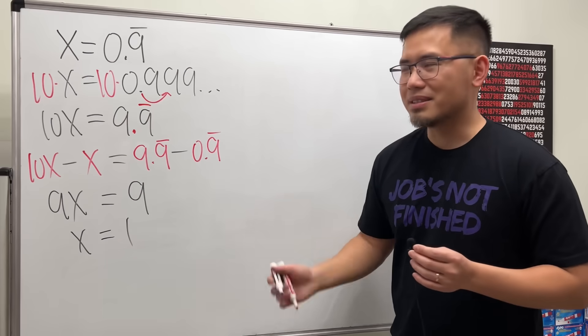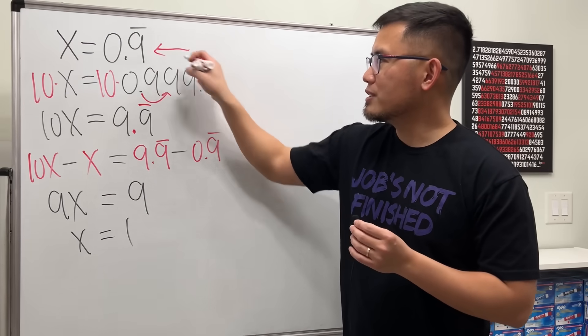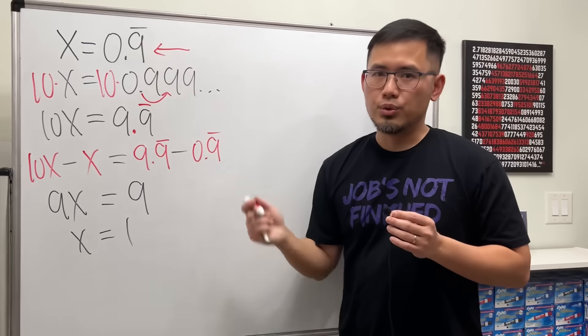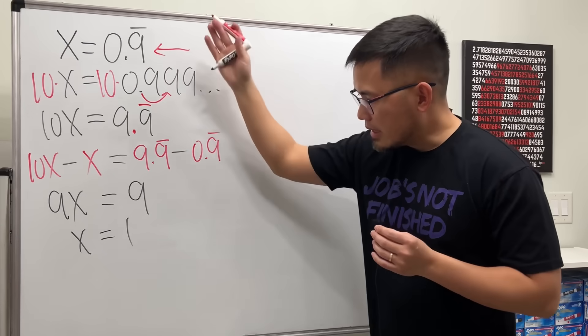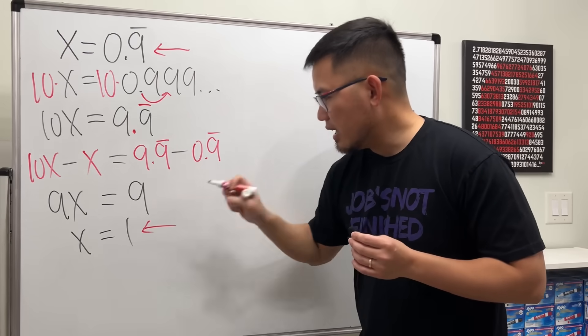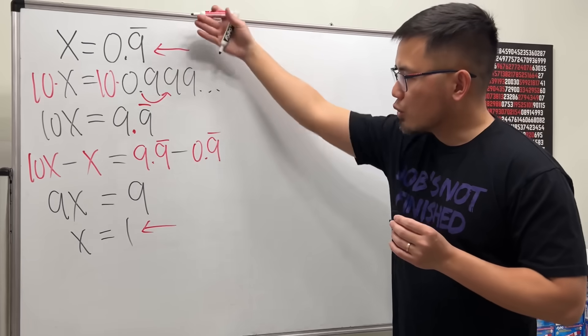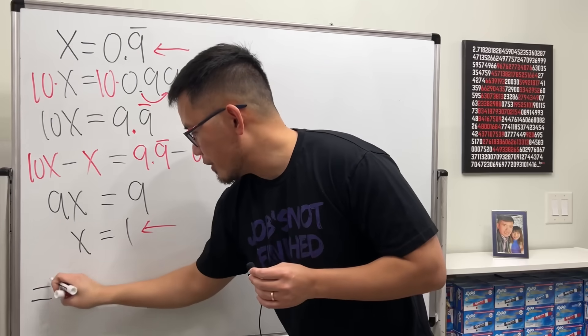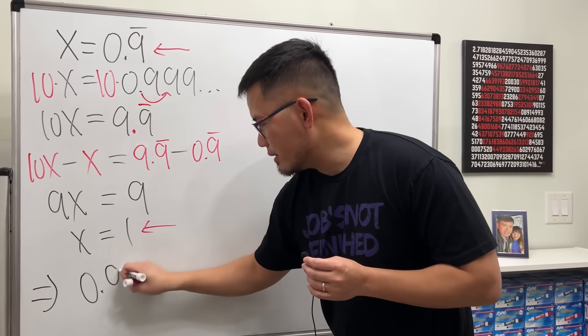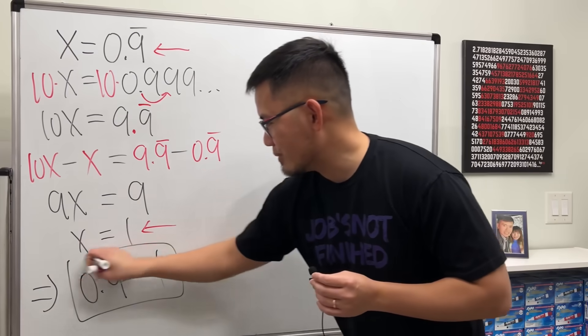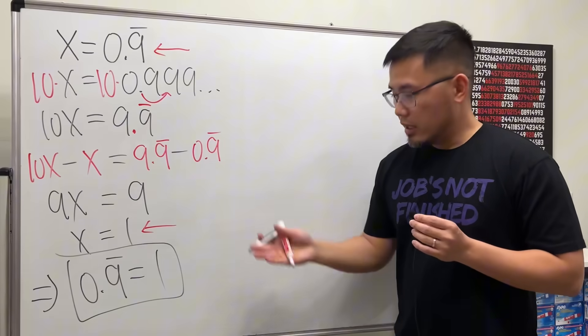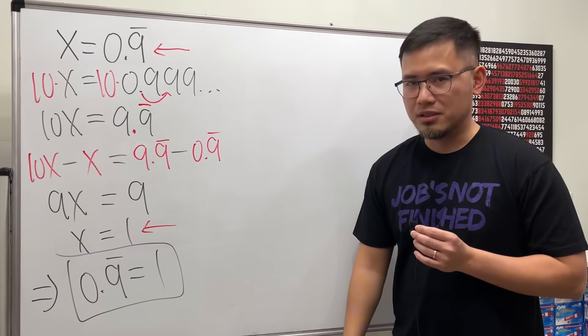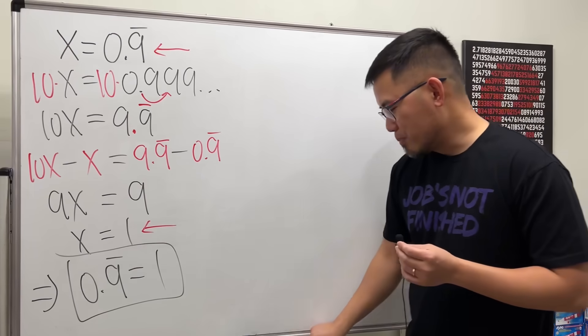So what exactly is going on? If we look back to the first line, we are saying x is equal to 0.9 repeating. And after all this, we are saying that x is equal to 1. So combining these two together, we end up with saying 0.9 repeating is equal to 1. Wow, cool, huh? Is this true? Certainly, this is true. But a lot of people don't believe it.